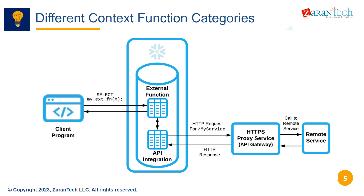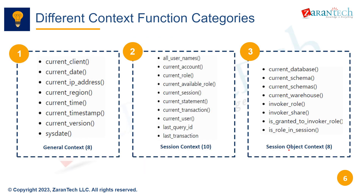There are three main categories of Snowflake context functions: general context, session context, and session object context. General context functions provide info about the query environment, like the current role and warehouse. Session context provides details on the user's session, like client type and IP address. And session object context gives metadata on session objects like schemas and databases.